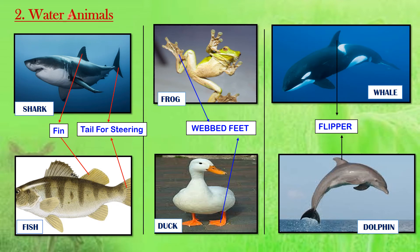Water animals that live in water, for example shark and fish, have fins and tails that help them to move. Frogs and ducks have webbed feet that help them in swimming. Sea mammals like whales and dolphins have flippers that help them for movement.